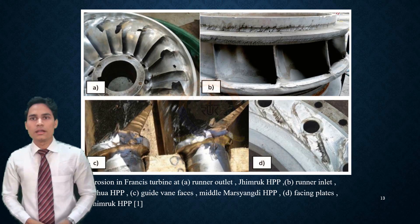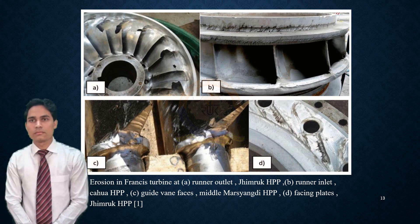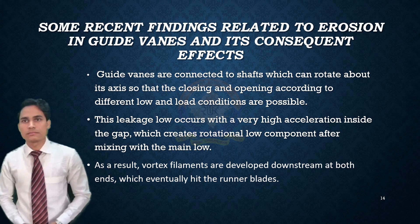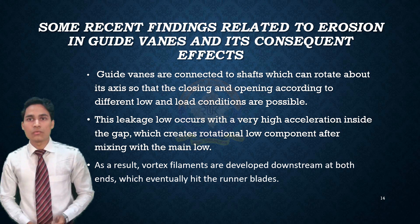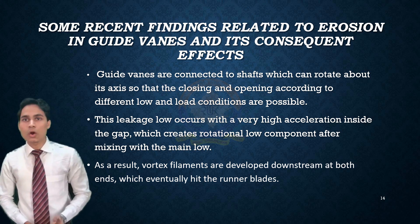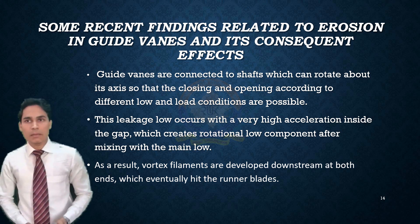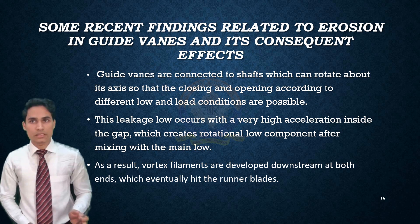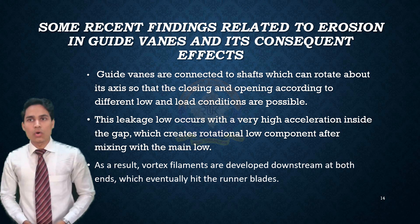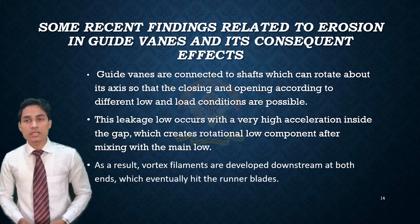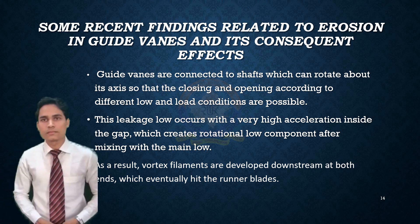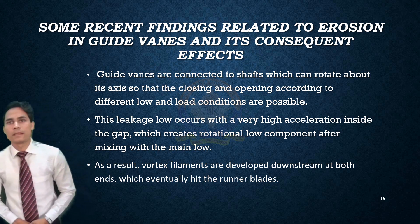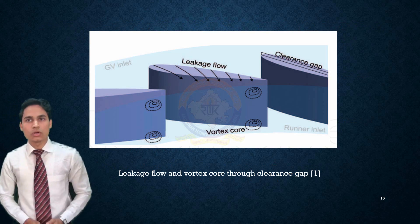Some recent findings related to erosion in guide vanes and its consequent effects. Guide vanes are connected to shafts which can rotate about their axis so that closing and opening according to different flow and load conditions are possible. Inside the clearance gap, the flow is driven from the high pressure side to the low pressure side, disturbing the primary flow. This leakage occurs with very high acceleration inside the gap, which creates a rotational flow component after mixing with the main flow. As a result, vortex filament elements are developed downstream at both ends, which eventually hit the wear plates.